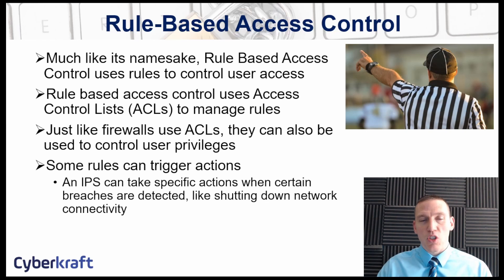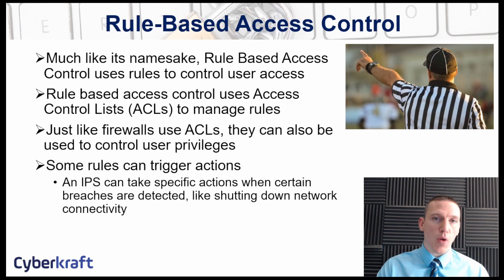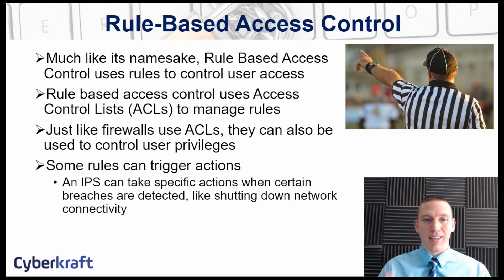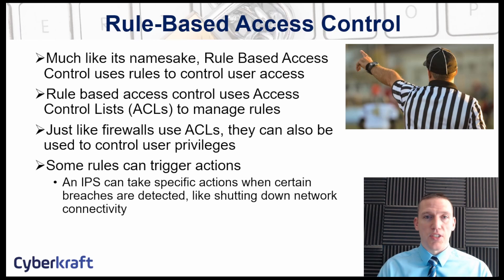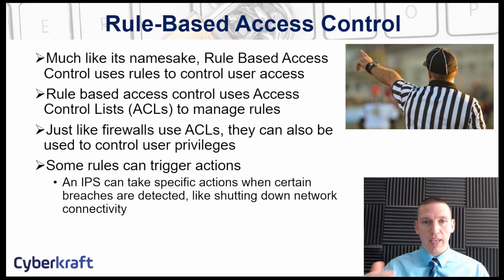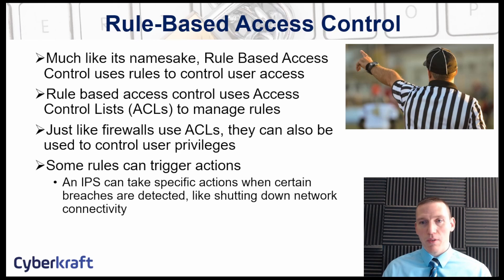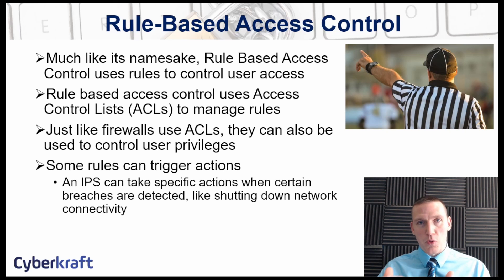Rule-based access control uses different rules to control user access. These rules are usually stored in an access control list, normally called an ACL. Just like a firewall uses ACLs, rule-based access control stores those rules as plain text statements in ACLs. Rule-based access control is often used in security devices like intrusion prevention systems. An ACL controls access to different systems and devices, and the IPS follows those rules in order. Firewalls also often use this approach — it's useful for managing access control for devices and systems rather than a people-oriented approach.